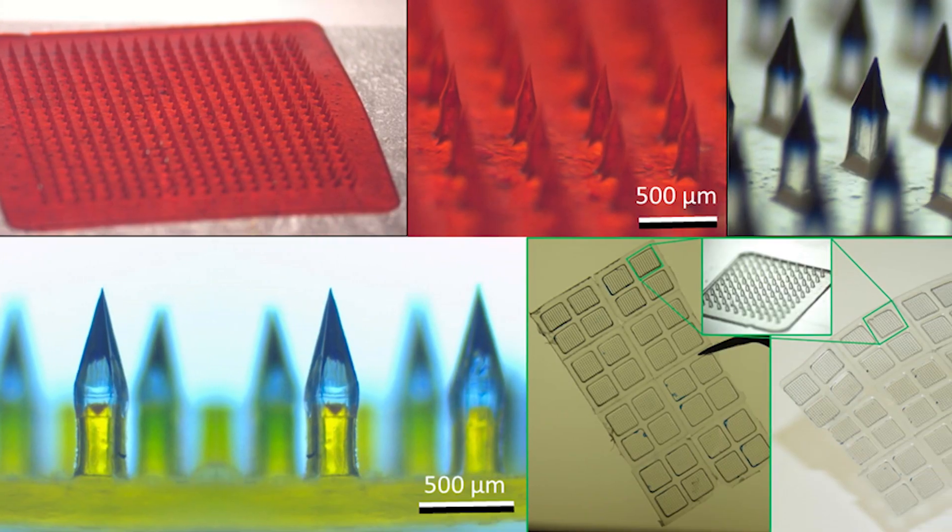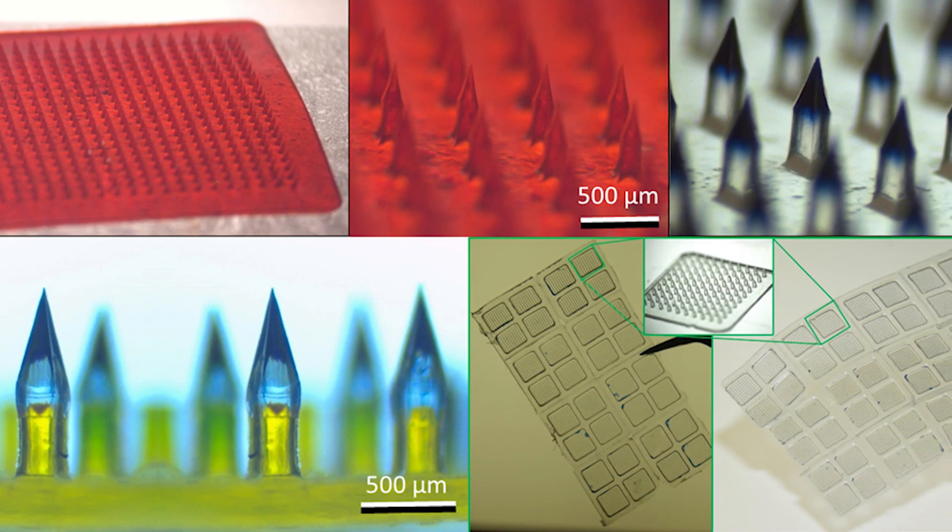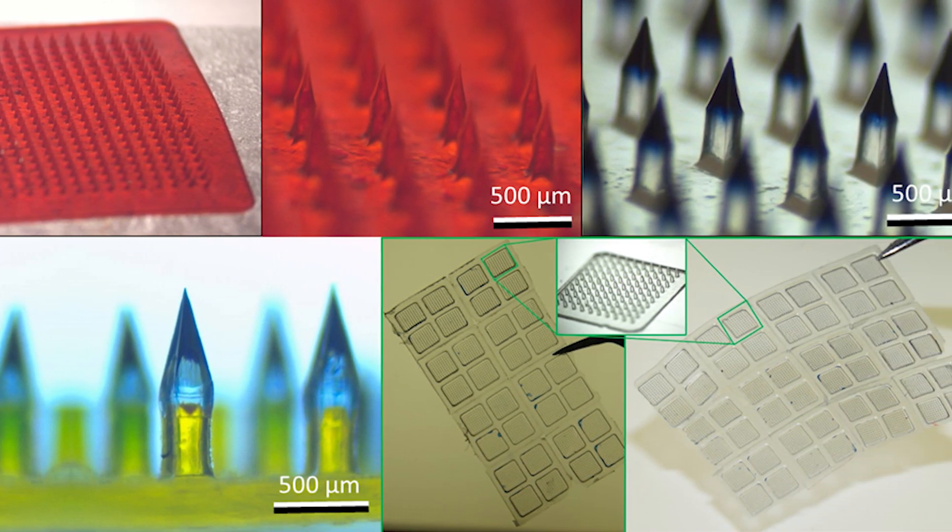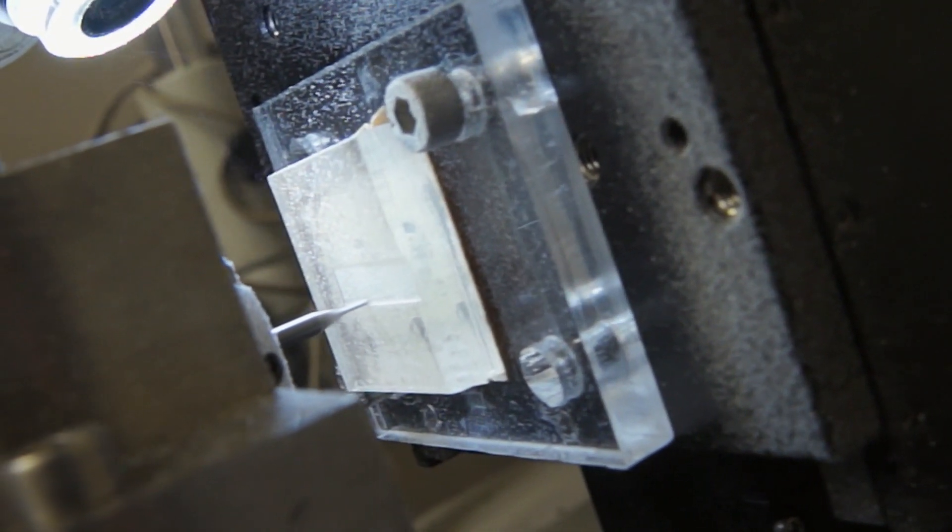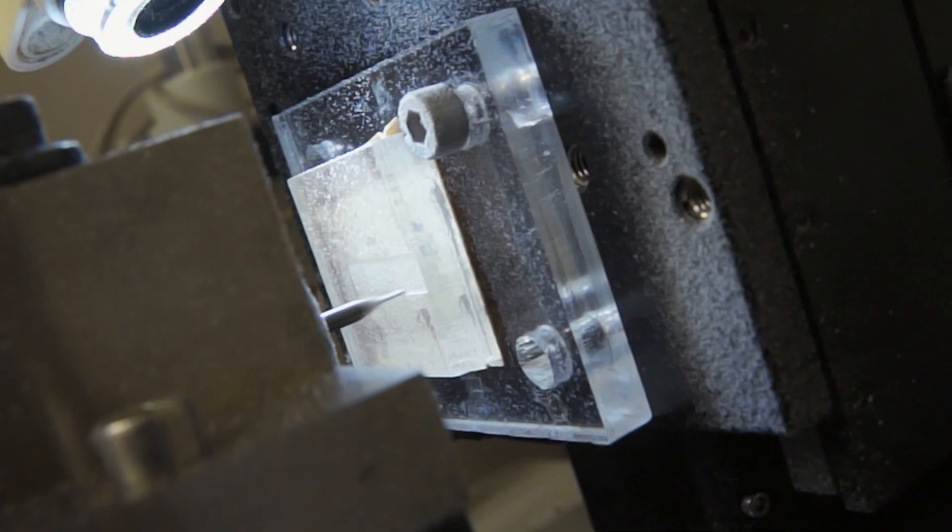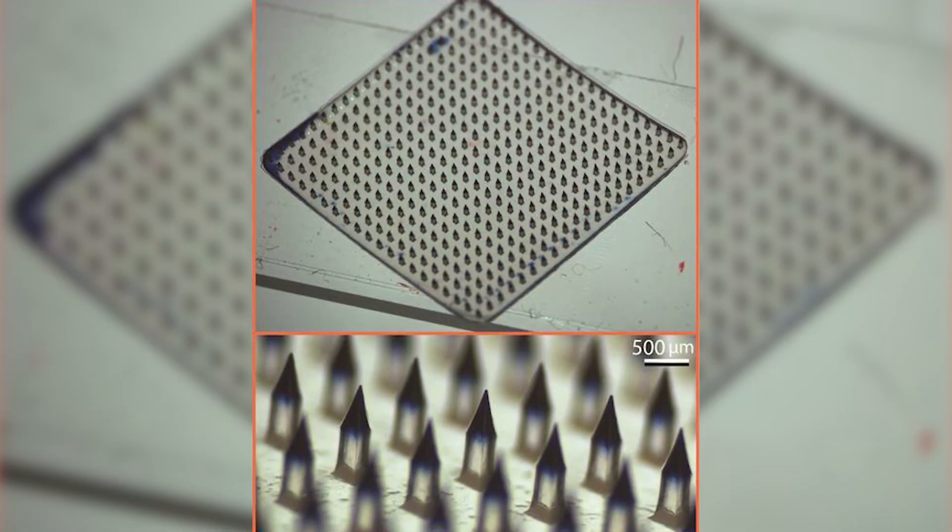These are tiny needles. The thickness of each needle is about the thickness of a hair, and we can make patches out of these. These particular patches are made from a dissolvable material, so when we apply them, the material dissolves inside the skin.